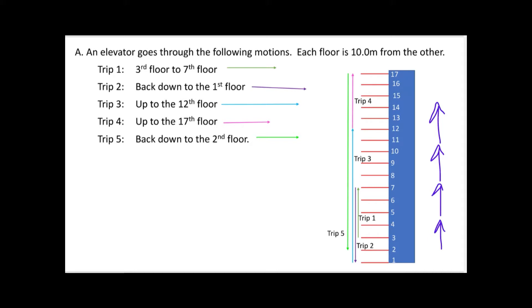In trip one, the elevator is going from the third floor to the seventh floor, so this would be 10 meters, 20 meters, 30 meters, 40 meters. Because it went four spaces. Does that make sense to you guys?